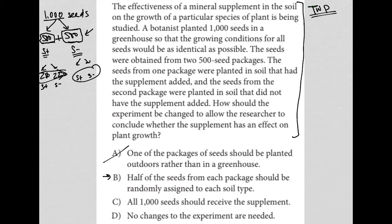Choice C: all 1,000 seeds should receive the supplement. No, because then we have nothing to compare it to. Not receiving the supplement might produce the exact same growth as receiving it, which would tell us the supplement wasn't useful at all — but we wouldn't know that without a control group. Choice D is also not the answer, for the same reasons already explained. So choice B is the best answer.